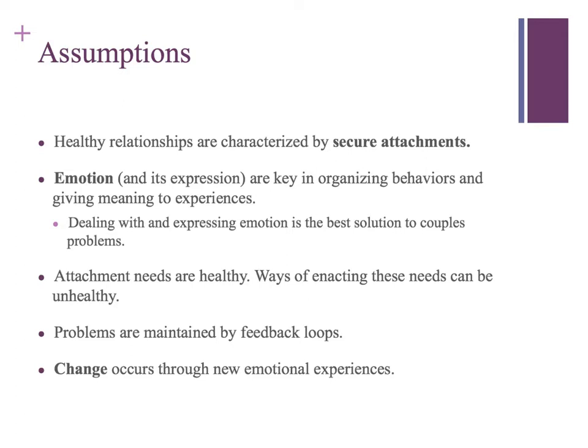Instances of neglect, abuse, or inconsistent caregiving can lead to types of insecure attachment, like avoidant or anxious. But secure attachment would be developed if somebody was given appropriate care and responded to their needs. Essentially, you then learn to expect that a loved one or a primary partner can respond to your emotional needs.